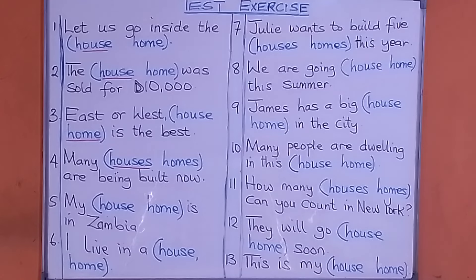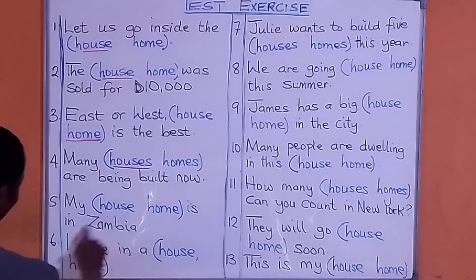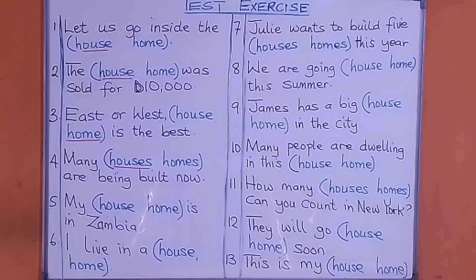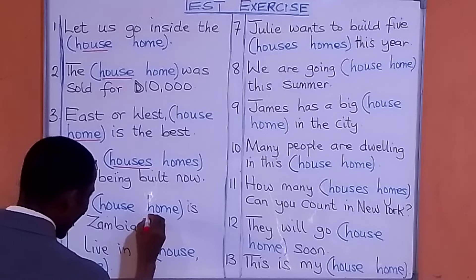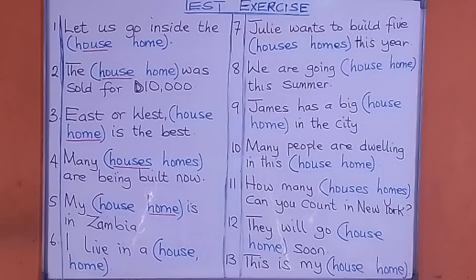Number five: 'My ___ is in Zambia.' What are we going to put there? My home is in Zambia. You could also say 'my house' — that is your building — but take care when you say house.